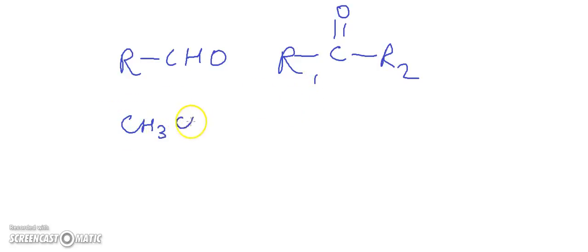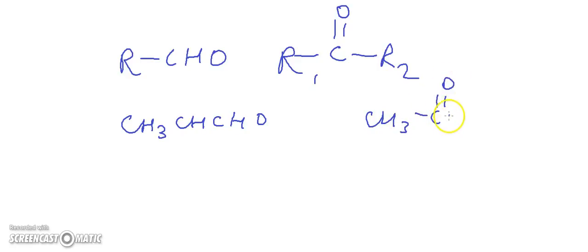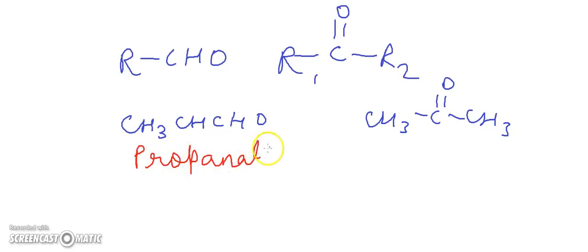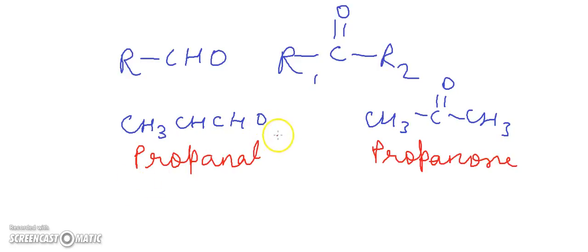For example, CH3-CH2-CHO (propanal) and CH3-CO-CH3 (propanone) are functional isomers with the same molecular formula C3H6O but different functional groups.